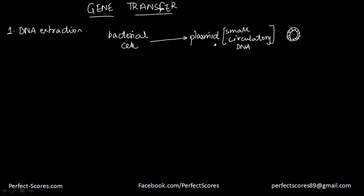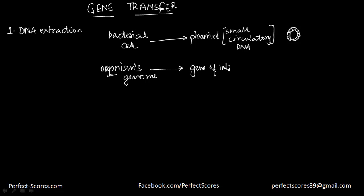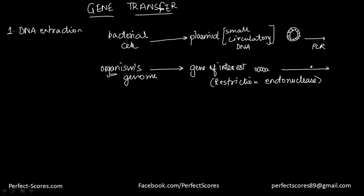This is a plasmid taken out of a bacterial cell. Similarly, a gene of interest is taken from an organism's genome — this is the organism whose gene we want to transfer. From its genome, we take the gene of interest, which is basically a segment of the DNA. This is done using the enzyme restriction endonuclease, which cuts and removes the gene of interest.